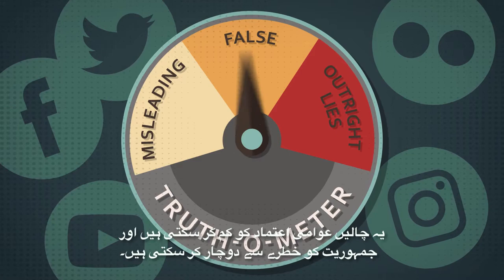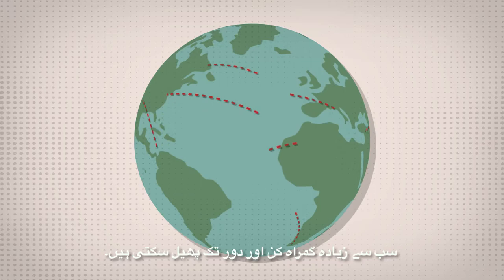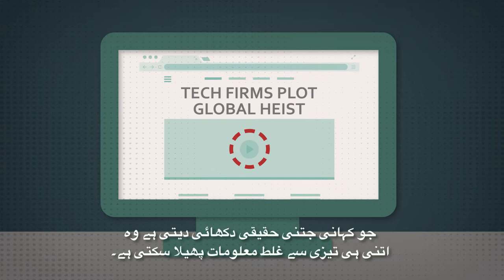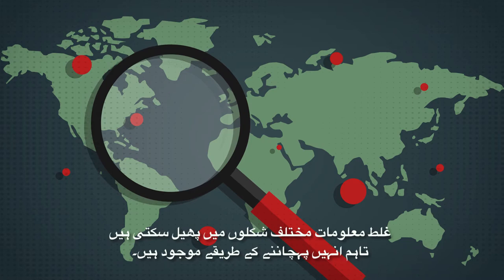While the most outrageous headlines may be entertaining and easy to spot, it's often the most convincing stories that are the most deceptive and spread the furthest. But recognizing disinformation is not always as straightforward as you think. The more realistic the story seems, the quicker false information can spread. The first step in stopping the spread of disinformation is recognizing it and its real impacts. Disinformation circulates in a variety of forms, but there are ways to spot it.